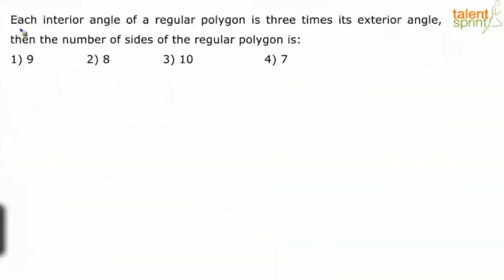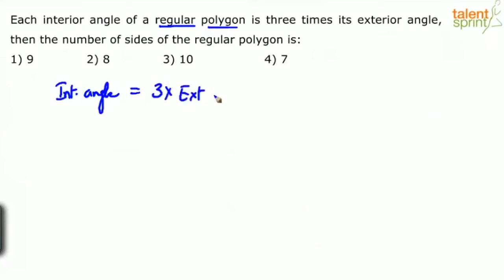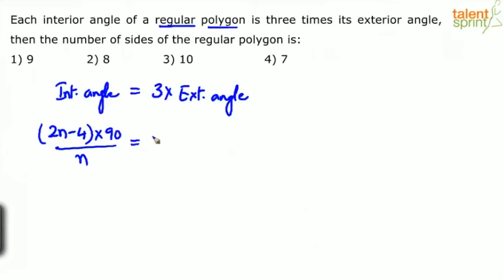Next problem: each interior angle of a regular polygon is three times its exterior angle. Find the number of sides. The formula for the interior angle of a regular polygon is (2n − 4) × 90 divided by n, and the exterior angle is 360 divided by n. Setting interior angle equal to three times the exterior angle gives one equation in one unknown.